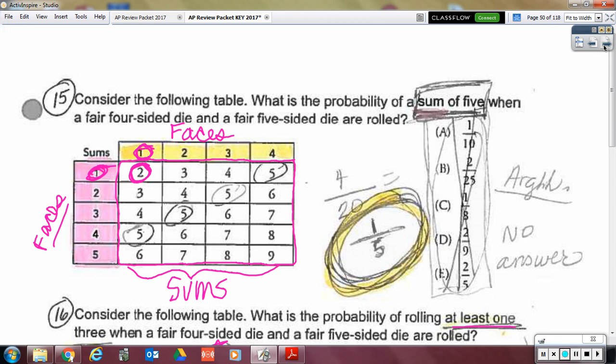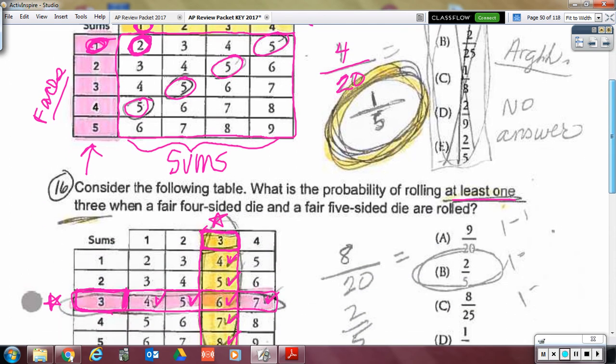All right. Moving on. So this one had a four-sided die and a five-sided die. Here was the four-sided die. Here was the five-sided die. And all of the sums are in the middle. One on that face, one on that face made a sum of two. So that's how this chart read. So what's the probability that you have a sum of five? So there are four times that you could have a sum of five out of the 20 possible sums. That reduces to one-fifth. Which wasn't there. But I told you all that.